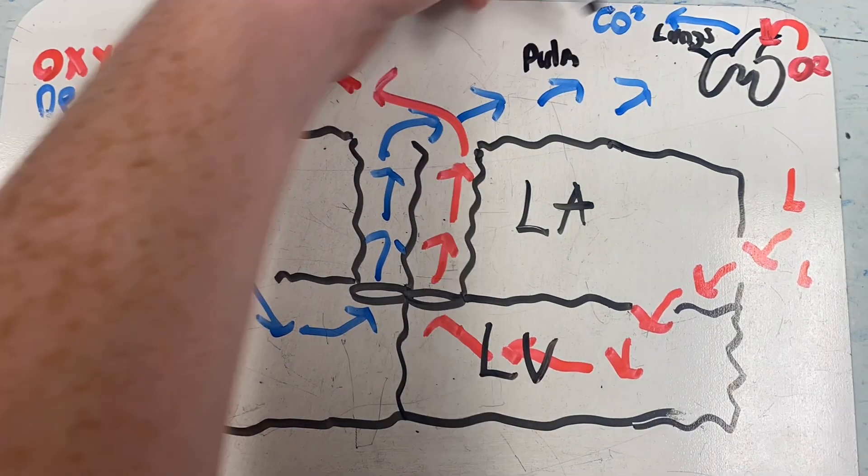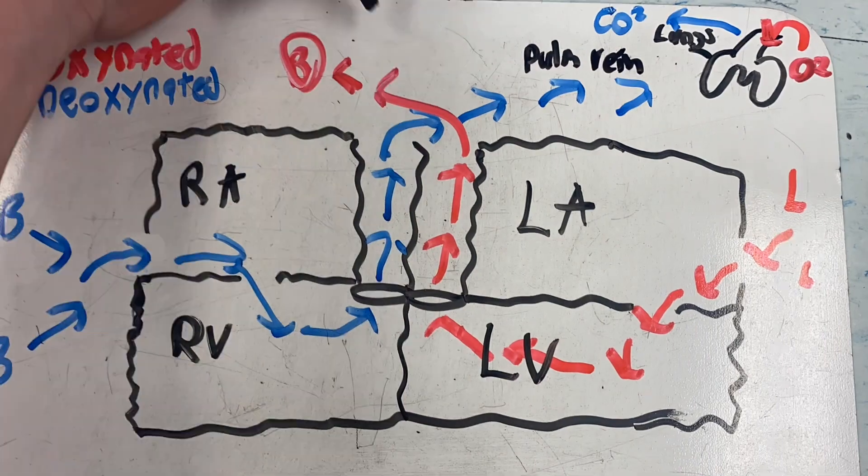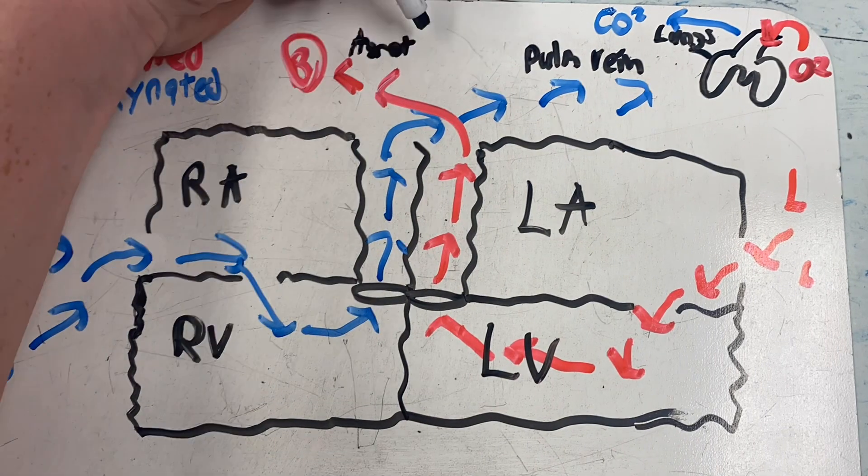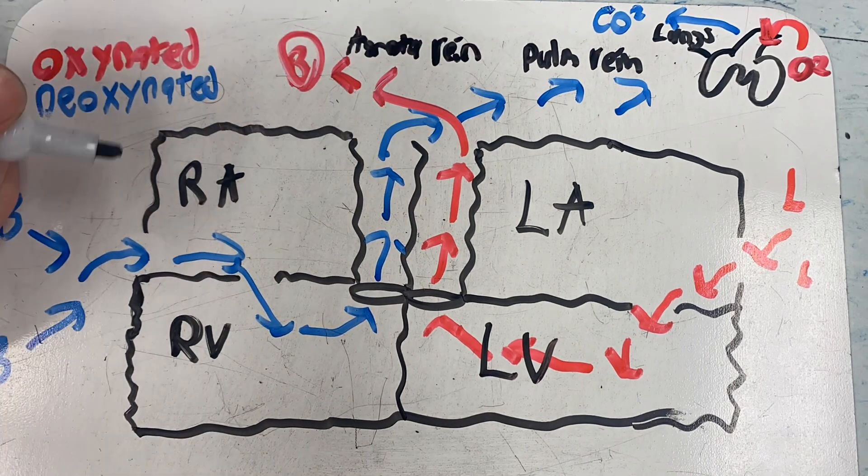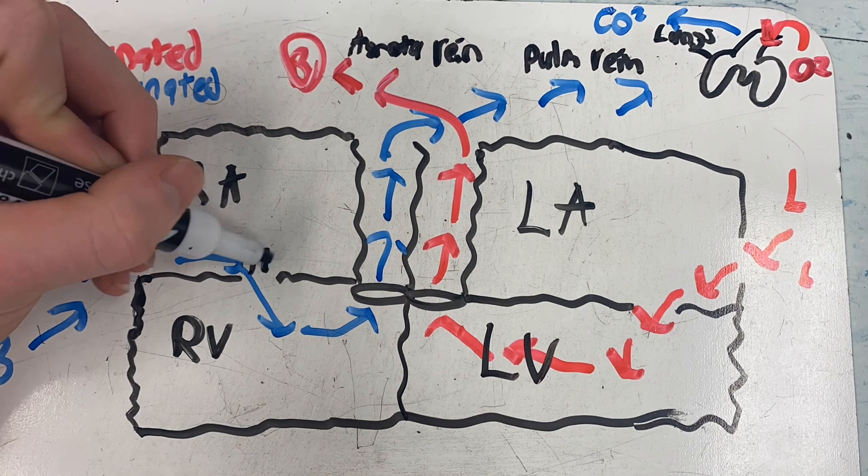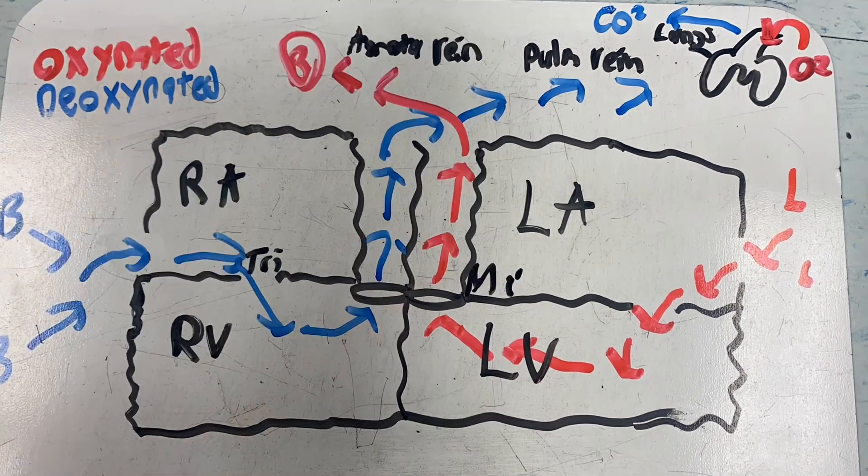So with that being said, you have your right atrium and your left atrium flipped on top, and then on the bottom you have your right ventricle on the left, and your left ventricle on the right.